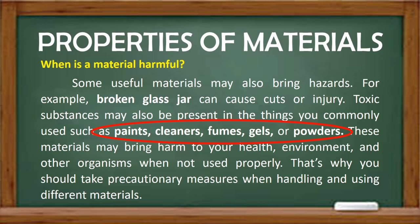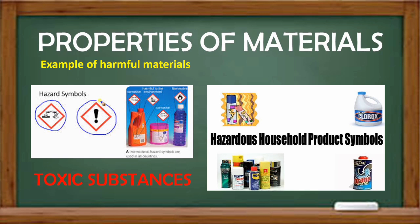These materials may bring harm to your health, environment, and other organisms when not used properly. That's why you should take precautionary measures when handling and using different materials. Here are examples of toxic substances — they have symbols. Take a look at the symbols used for these substances. We also have here hazardous household products.